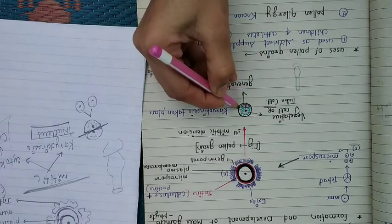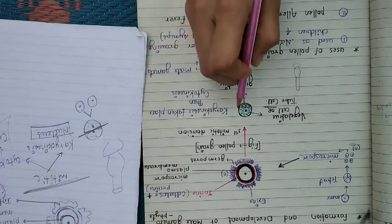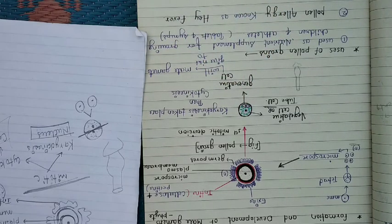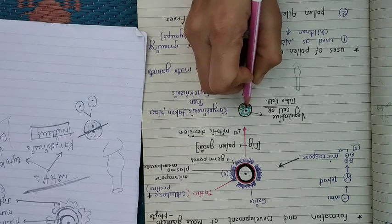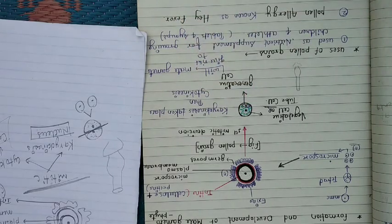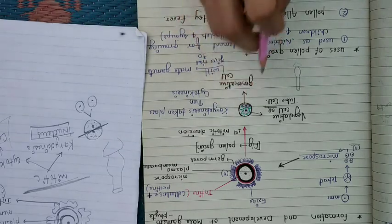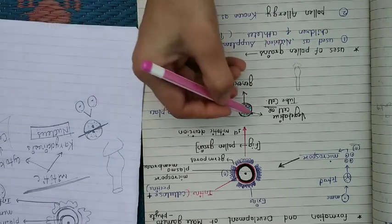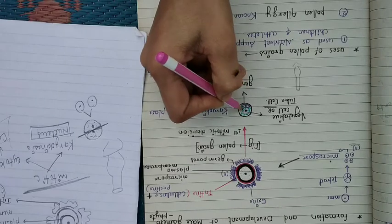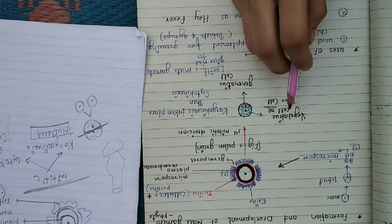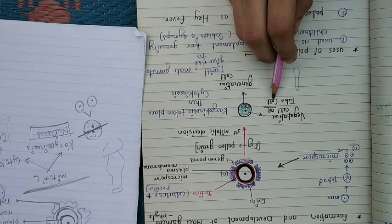We now have two cells. These cells are not identical — one has a dense cytoplasm and the other is different. The cell with dense cytoplasm is called the vegetative cell, also known as the tube cell.